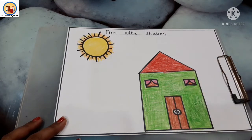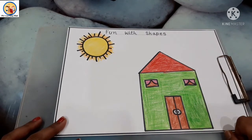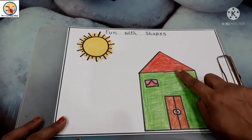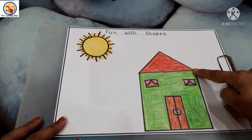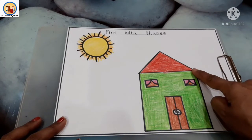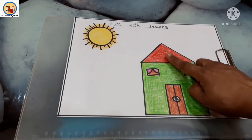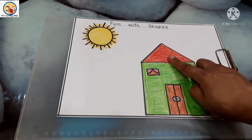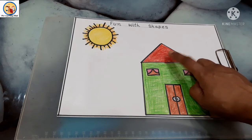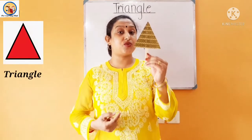Now tell me, what else can you see in this picture? Yes, the roof of the house! Look very diligently — one slanting line, then another slanting line, then a sleeping line. Do you know what this shape is called? This shape is called a triangle.